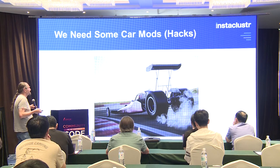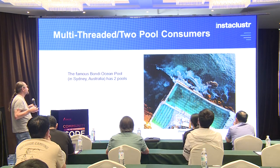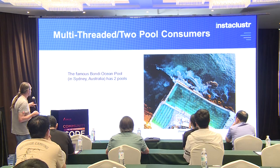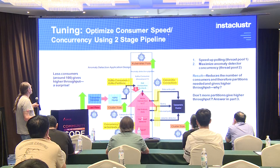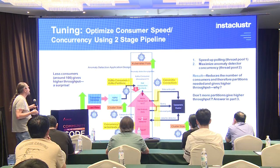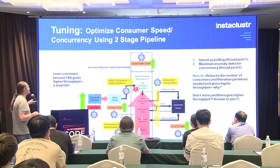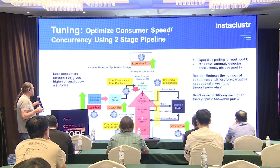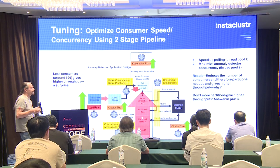We needed some modifications — some hacks — to try and speed things up. The approach I used was to introduce multiple threads to the consumer. I used two thread pools — a bit like the famous Bondi Ocean pool in Australia, which actually has two pools. I optimized the consumer to speed things up and increase concurrency using a two-stage pipeline. First, I sped up the Kafka polling by having that in a dedicated thread pool one. Then I maximized the anomaly detection concurrency by giving that a separate thread pool as well.